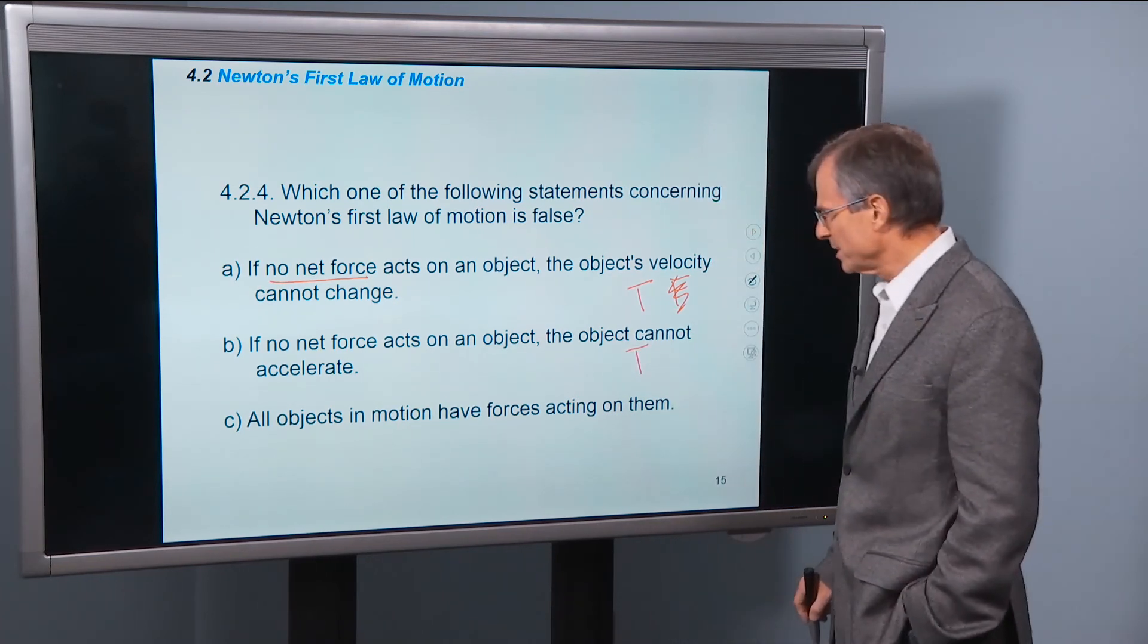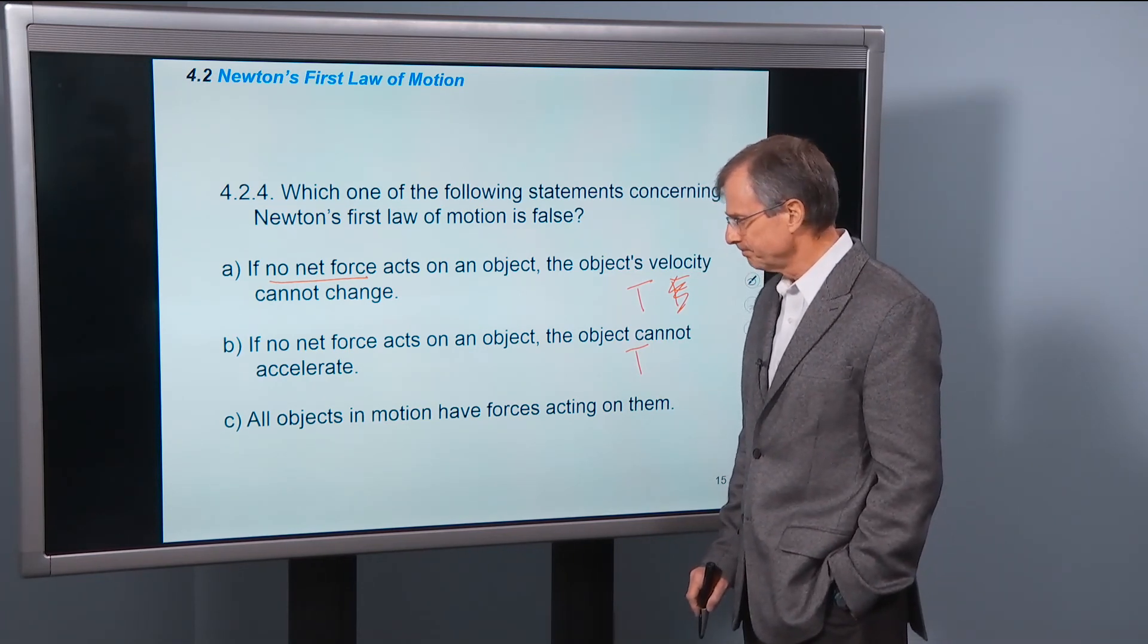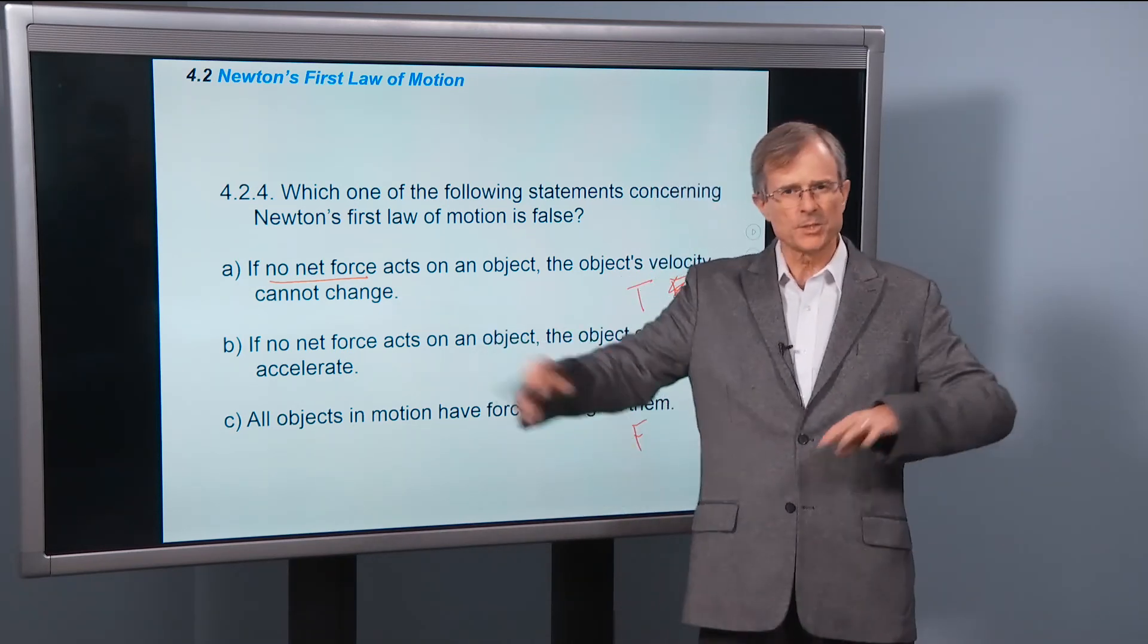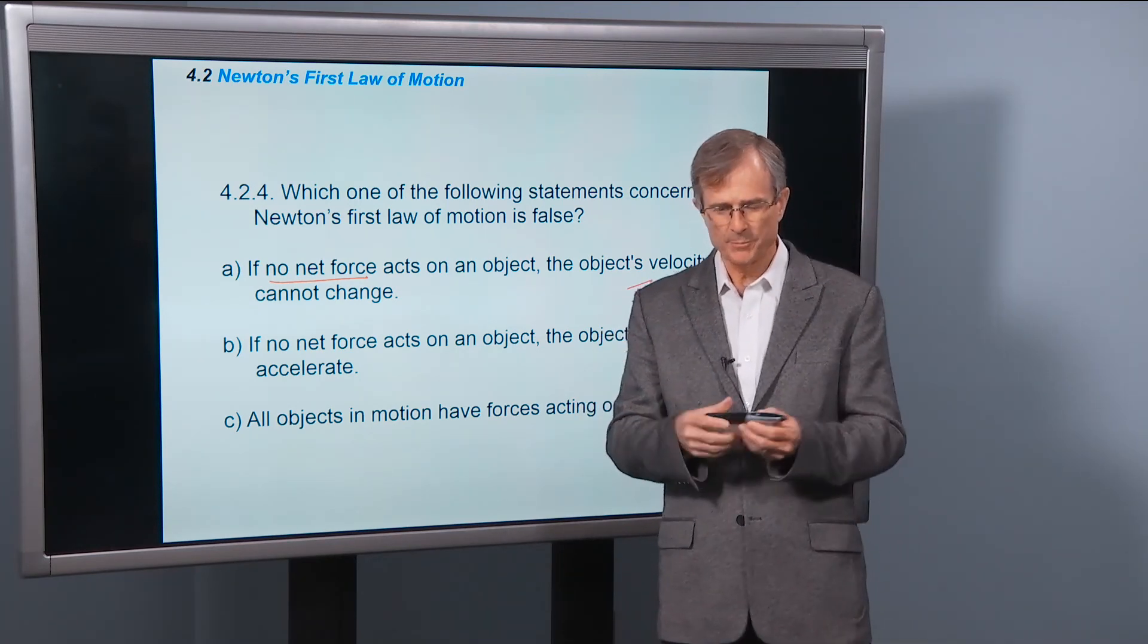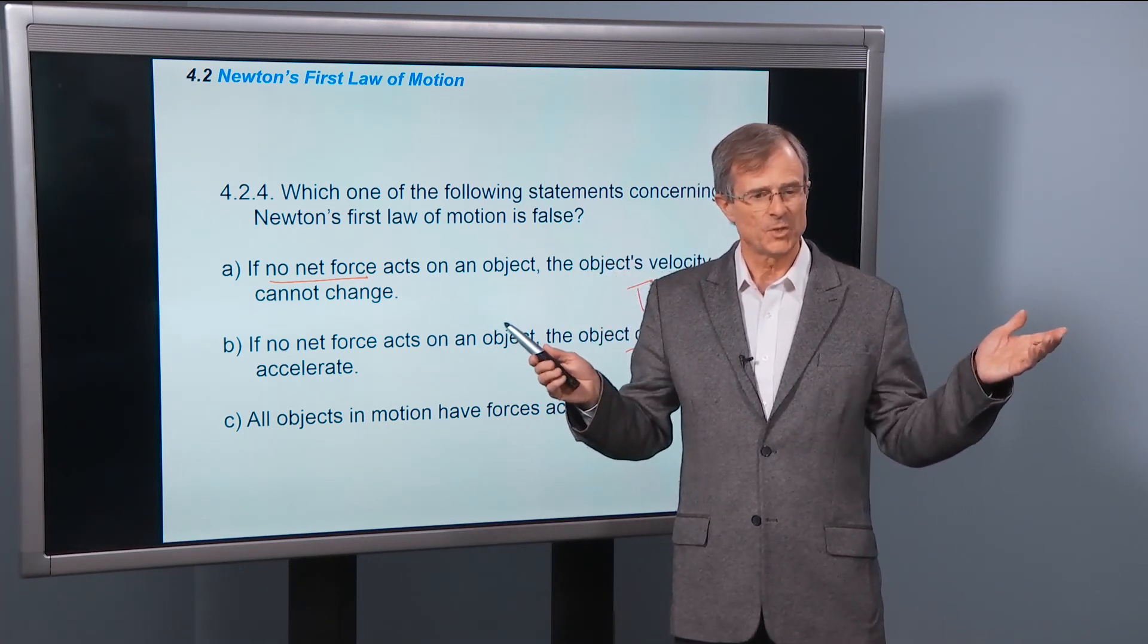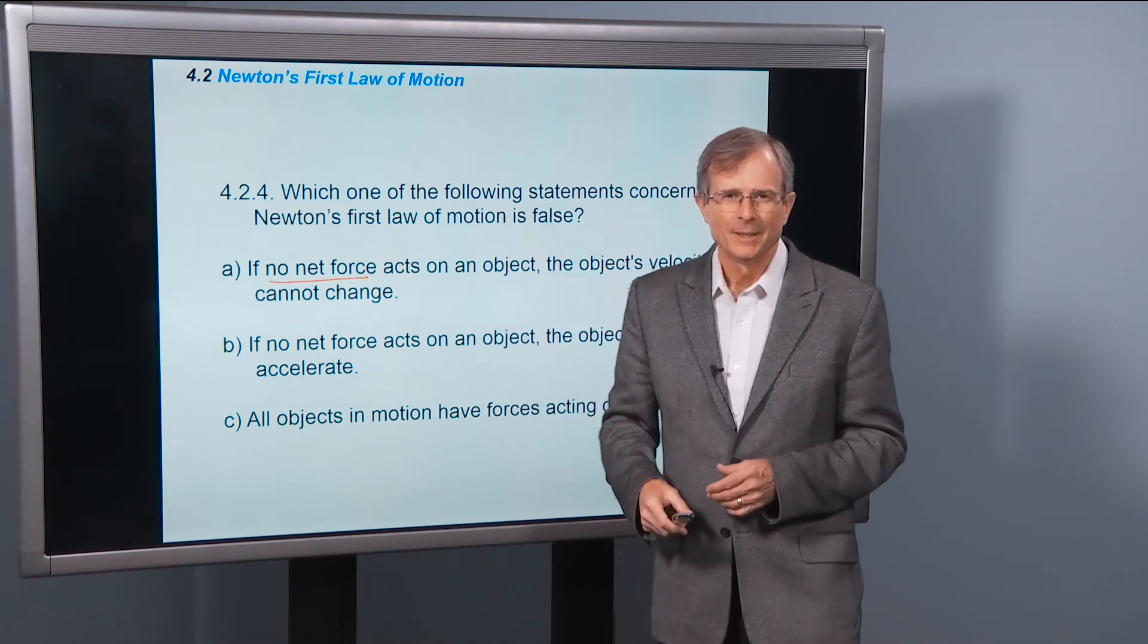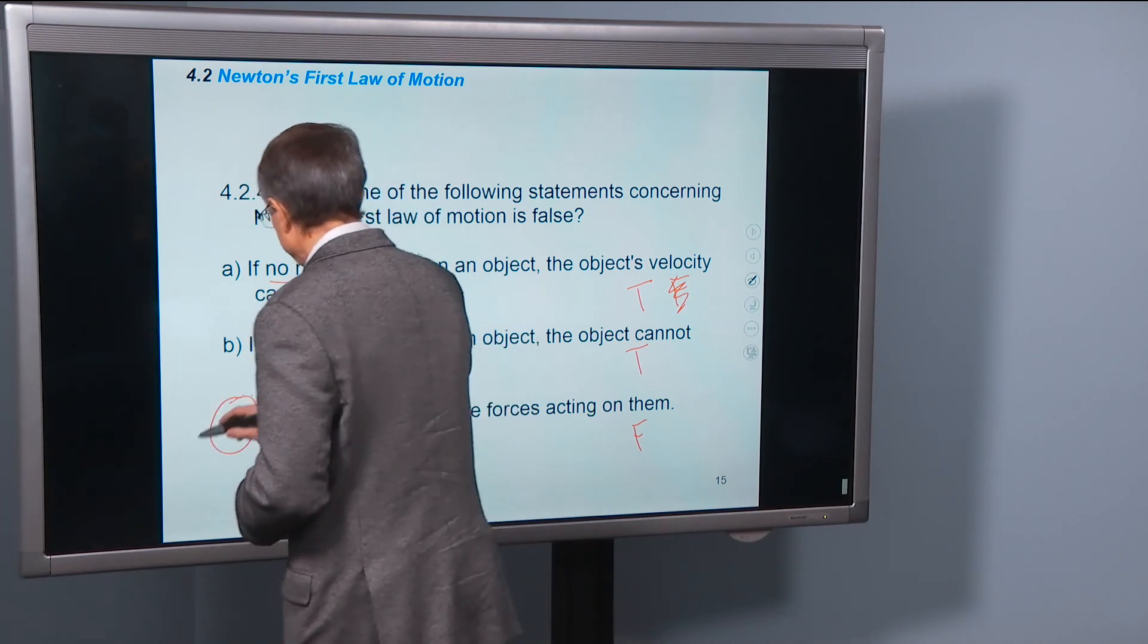And all objects in motion have forces acting on them. Well, not true. What about out in deep space? All planets and stars are far away, and you have an object, and it's just moving along at a constant velocity in deep space. There's no gravity, there's no normal force, there's no nothing. So an object can remain in motion with no forces acting on them. So this one is false, you know.